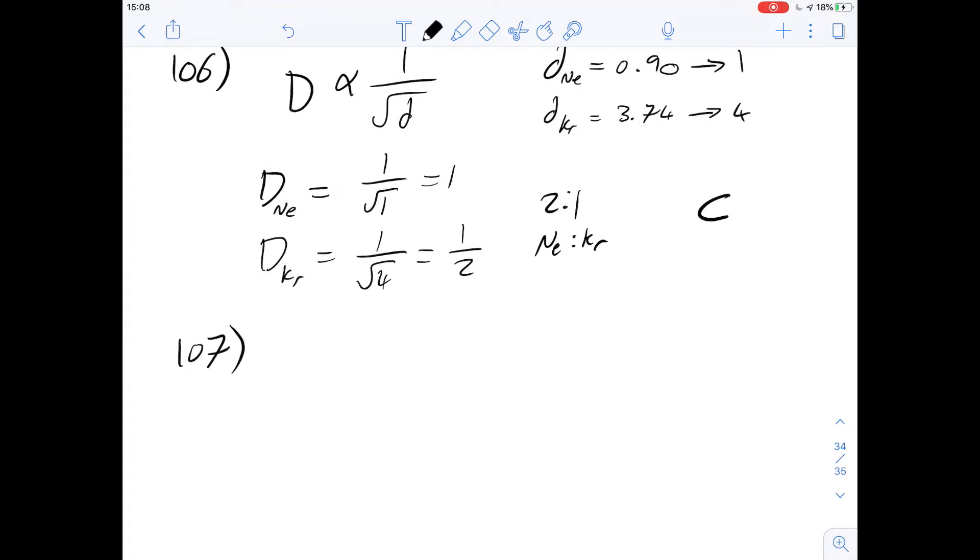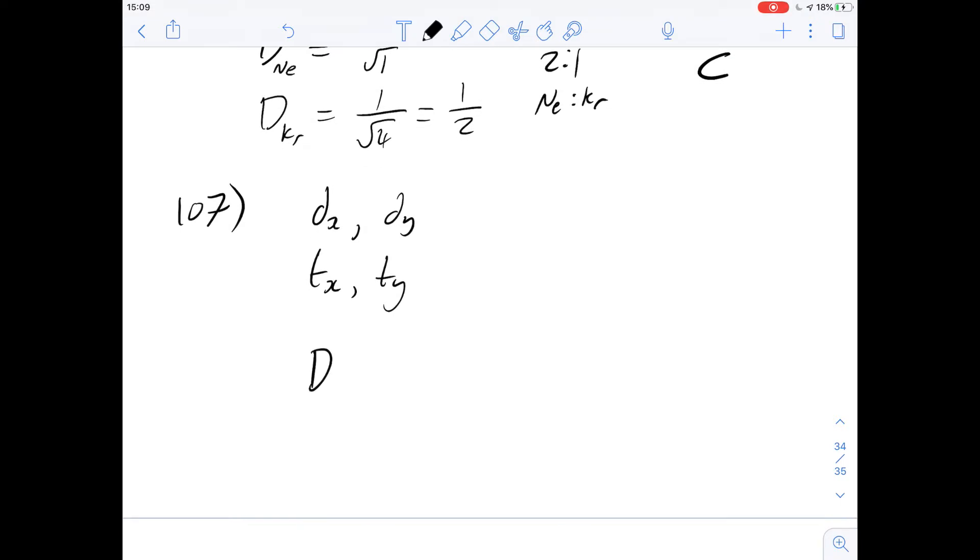107 has some additional information to it and the important bit there is the second sentence which says the rate of diffusion is easier to measure as it's inversely proportional to the time taken for a known volume to be released. That's the important bit. Okay, so 107 talks about two gases x and y and we're told that they have densities of dx and dy and they take a certain amount of time to diffuse which is going to be tx and ty. So we are asked if the time taken to release a certain volume of gas is tx and the time taken to release the same volume of gas y is ty and the ratio tx to ty is equal to what?